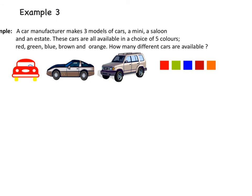Let's have a look at our next example. A car manufacturer makes 3 models of cars: a mini, a saloon which has just got 2 doors, and an estate. These cars are available in 5 different colors: red, green, blue, brown, and orange. How many different cars are available? Again, they're asking the question how many, so they're not asking us to list the outcomes.